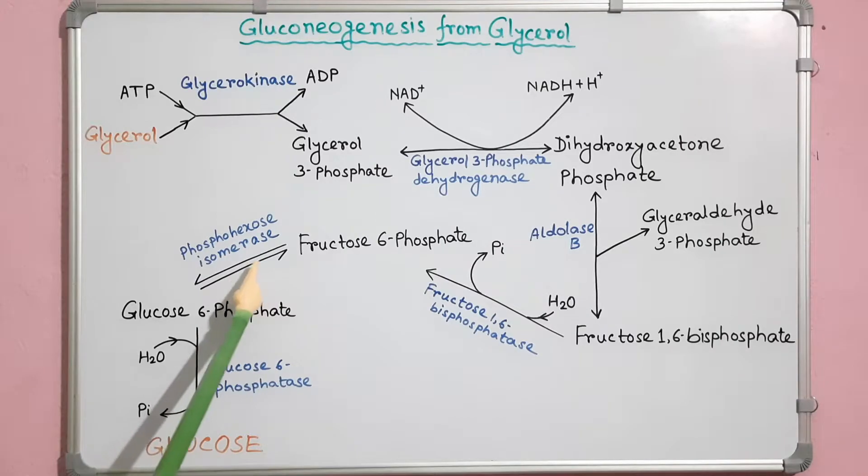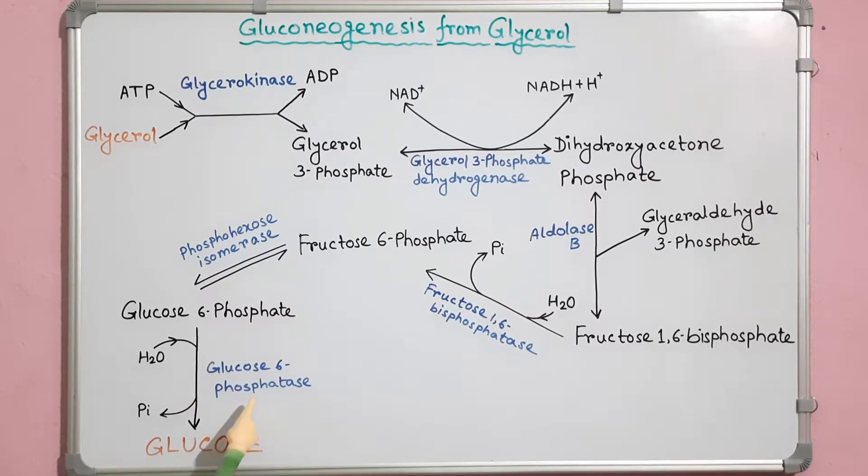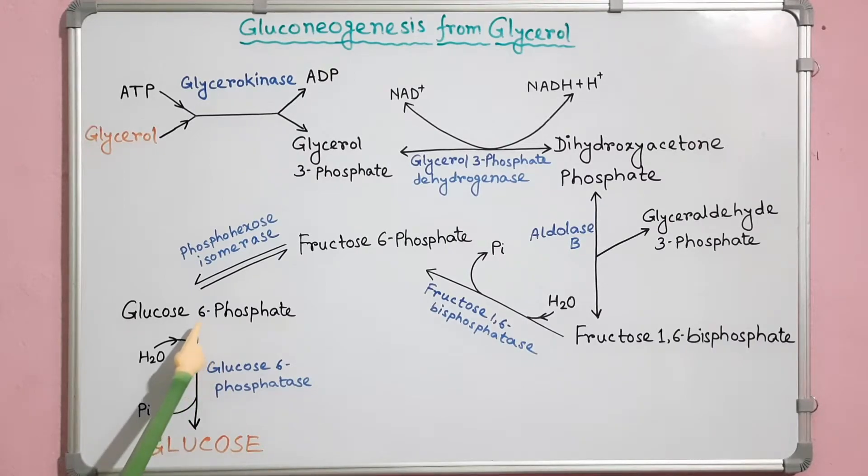Phosphohexose isomerase converts fructose-6-phosphate to glucose-6-phosphate. Finally, glucose-6-phosphatase enzyme converts glucose-6-phosphate to glucose molecules.